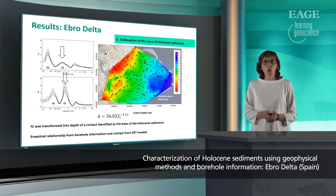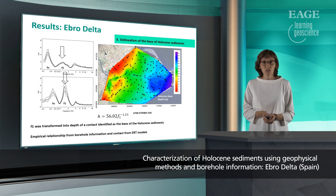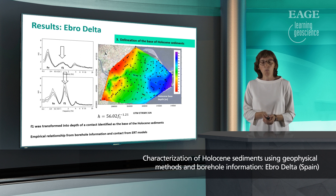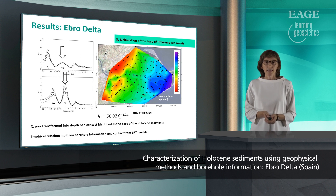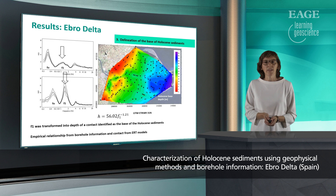The base of the Holocene sediments is mapped from all the HVSR measurements. The depth ranges between 0 and 70 meters, with a gradual increase from west to east. The southwest region is characterized by greater variability that can be related to ancient channels from the river in the subsurface.